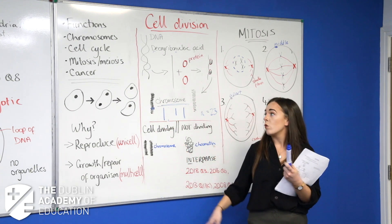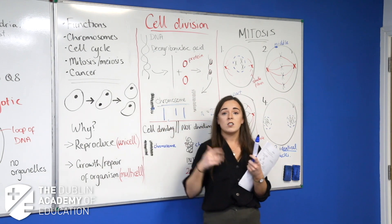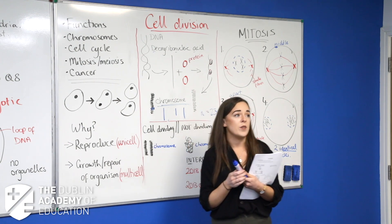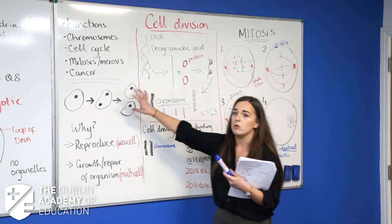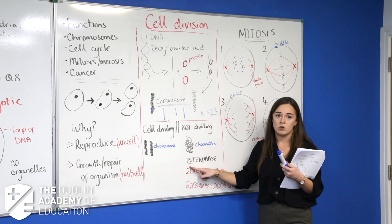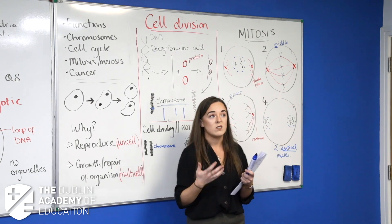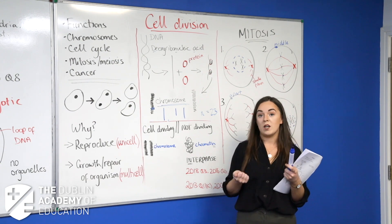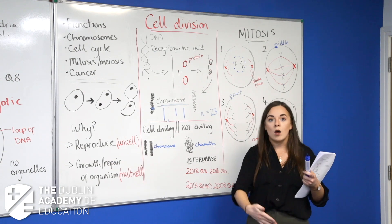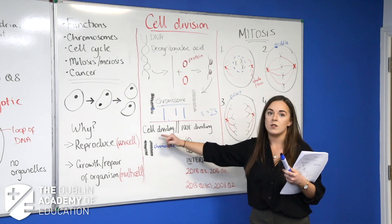When a cell is not dividing, it's in interphase — think of it like an intermission in a play. There's still stuff going on, but the cell isn't under pressure to divide. It's just chilling out, not actively making new cells.